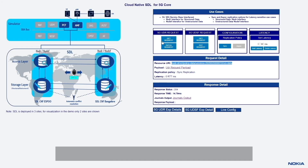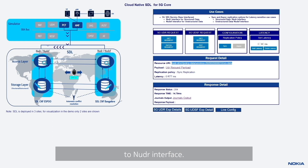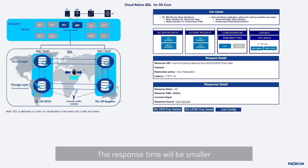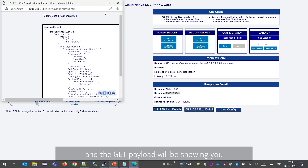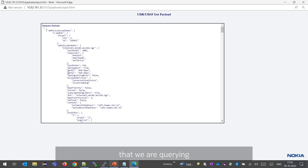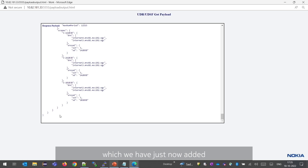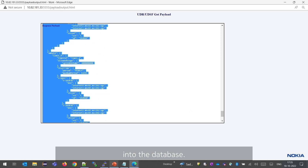Now we will run a GET request to retrieve the same data we just added. The GET request comes from PCF, goes to the NUDR interface, and will be served by the local site database, so the response will be sent immediately to the client with an even shorter response time due to local processing. The GET request is completed in 8 milliseconds. The GET payload shows we are querying the entire SM policy data, and we were successfully able to retrieve the resource we added to the database.